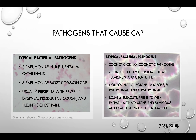Moreover, MRSA has been linked to a multilobar necrotizing CAP even in healthy patients. Other pathogens such as K. pneumoniae and Pseudomonas aeruginosa occur primarily in patients with chronic alcoholism or diabetes mellitus. Typical bacterial pathogens usually present with fever, dyspnea, productive cough, and often with pleuritic chest pain. Pneumonia with purulent sputum is usually caused by typical pathogens, with the exception of Legionnaire's disease.